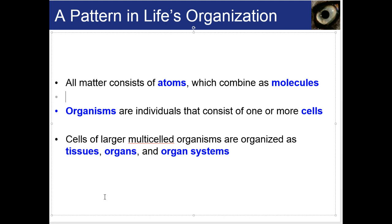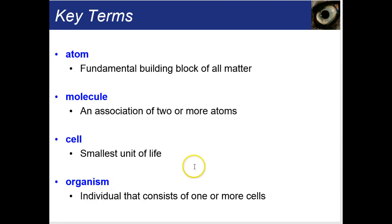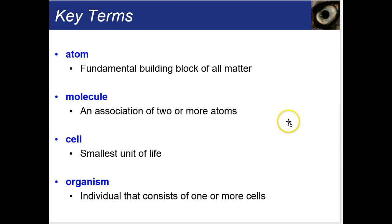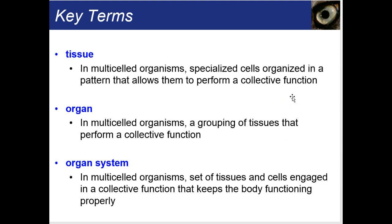Cells make up tissues. Tissues make up organs. Organs make up organ systems. And then we arrive at the actual organism. Here we have a term slide with the definitions of the terms I just stated.